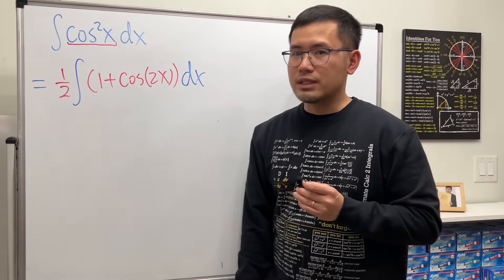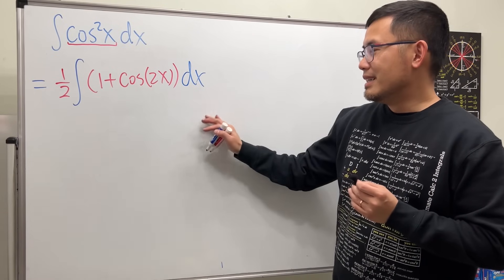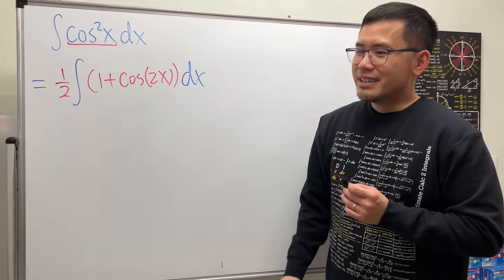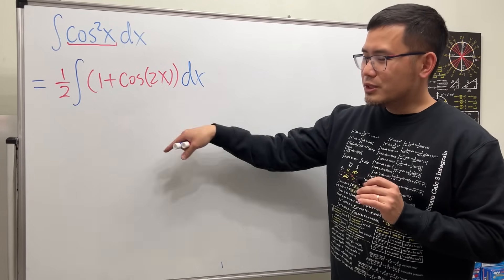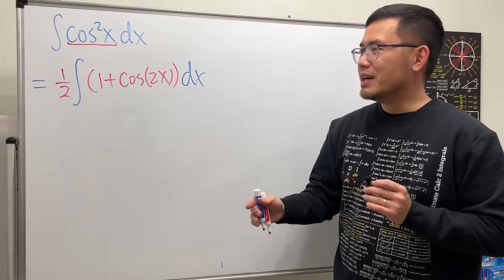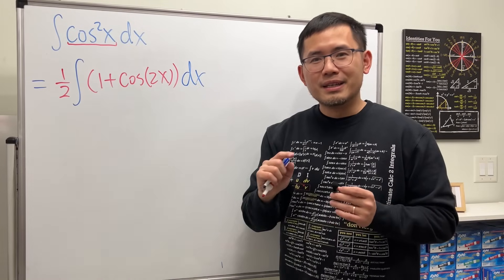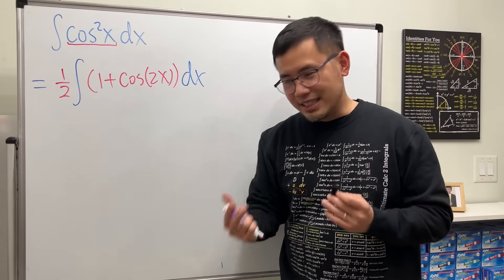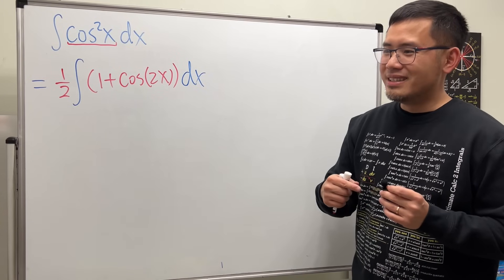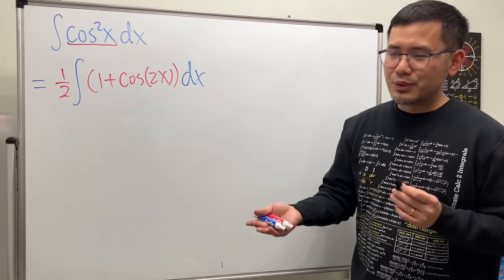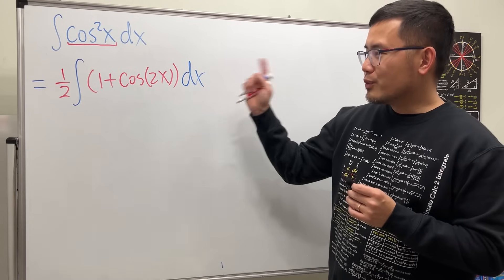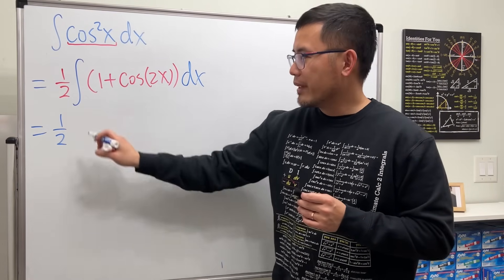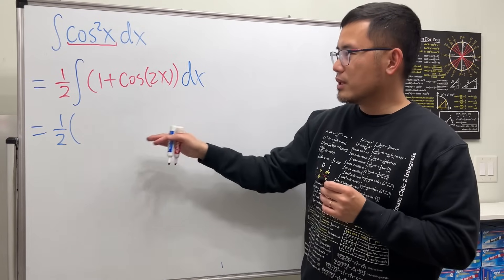We have the one half on the whole side already. A lot of people don't like this because who remembers this identity? I understand, but let me finish this first and then I'll show you how to do this with integration by parts. When we use integration by parts you will still have to use an identity, but that will just be the nicer Pythagorean identity, not this one. Anyway, let's go ahead.